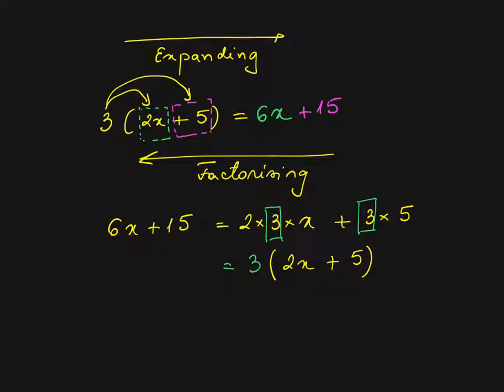If you omit this 3 because you put it already in front, you are left with 2x plus 5. So I omit the 3 here, I ignore it, and I copy everything as 2x plus 5. That's exactly our starting expression. Remember that factorizing is the opposite of expanding brackets. Let's take one more example.